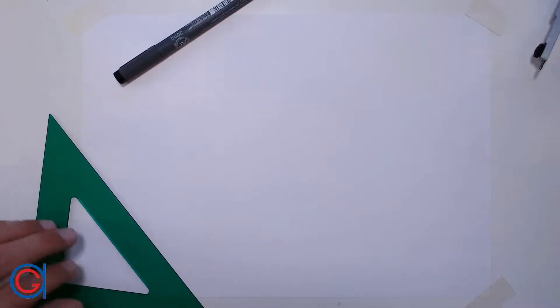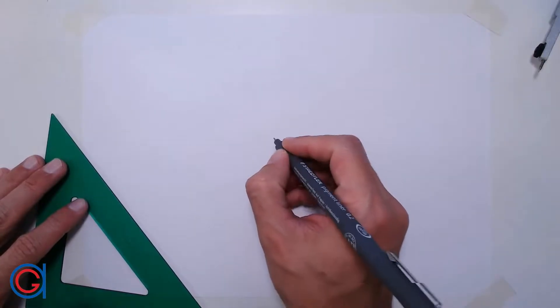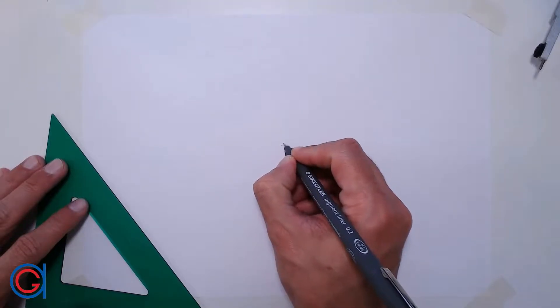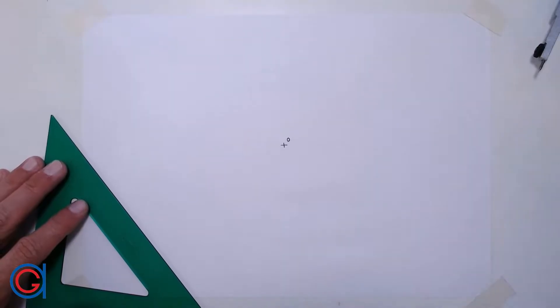So to start, we are going to mark a point, center point O in the center of the page, which is going to be the center point of the circle where the pentagon is going to be inscribed.